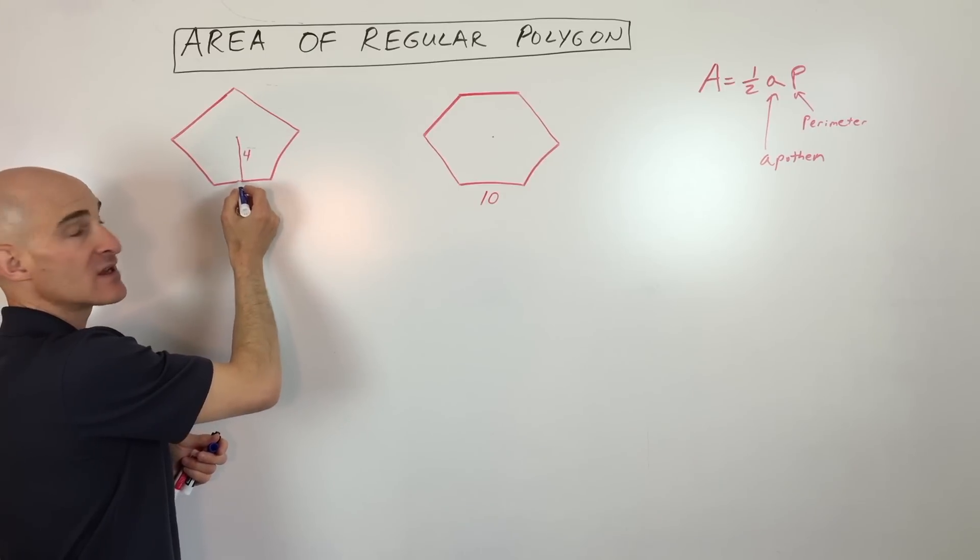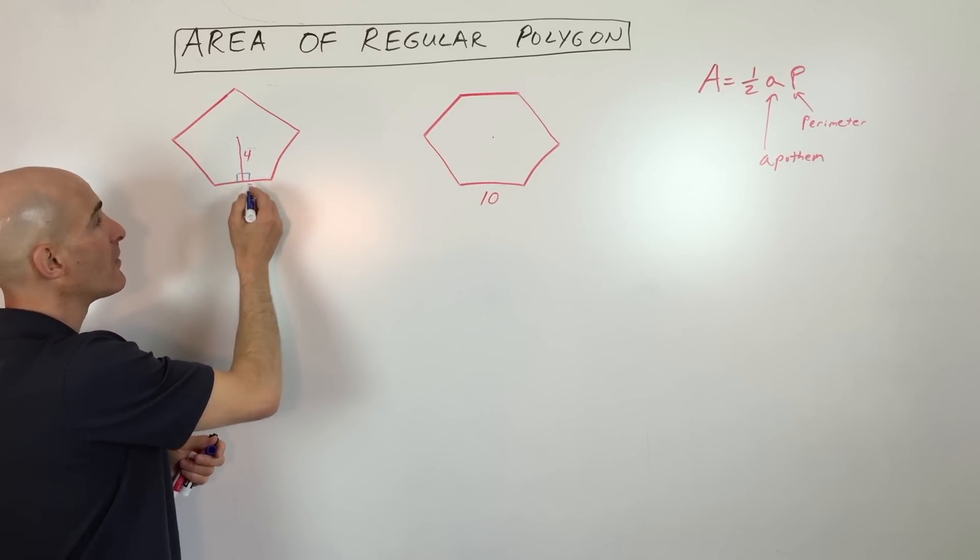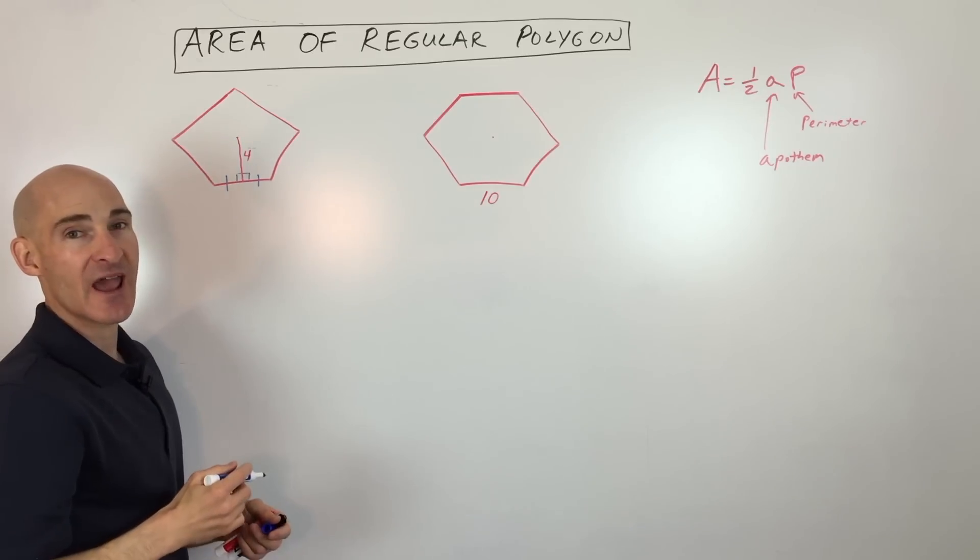So when you drop this perpendicular here, it's going to be at a right angle, and it's also going to bisect that side. It's going to cut it in half.